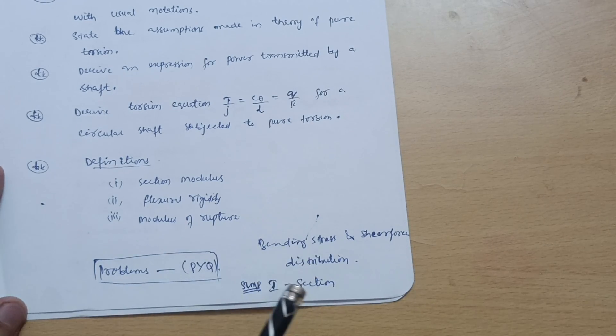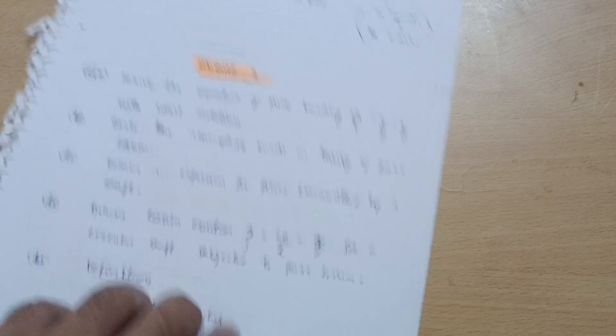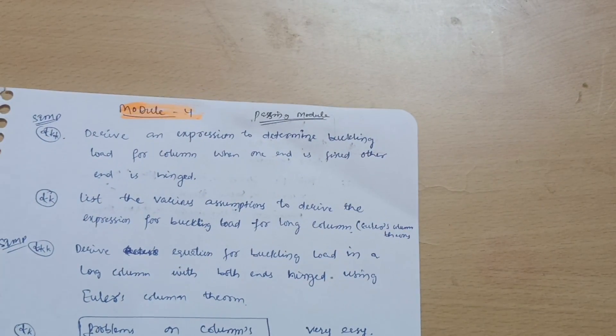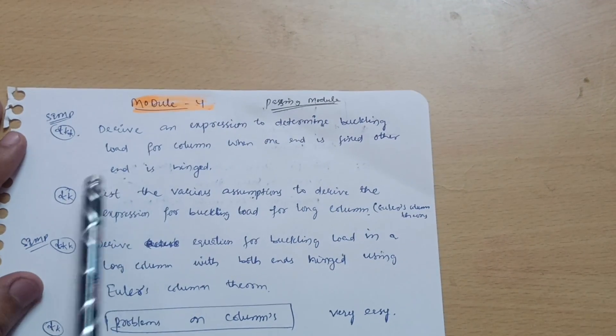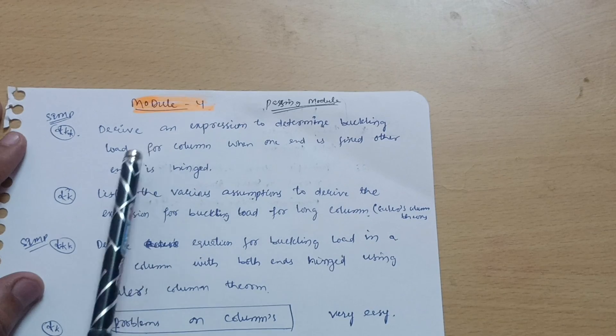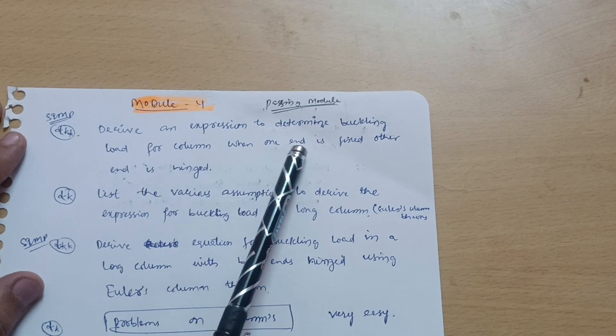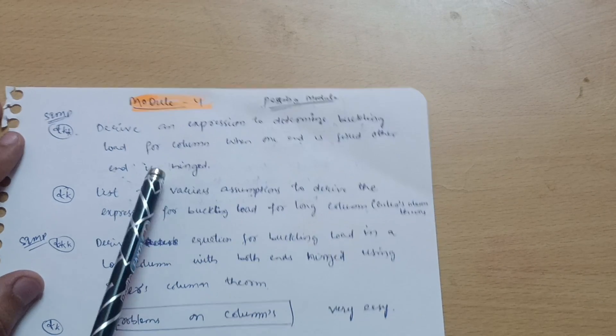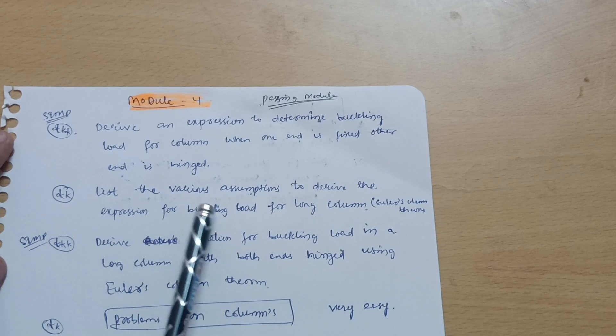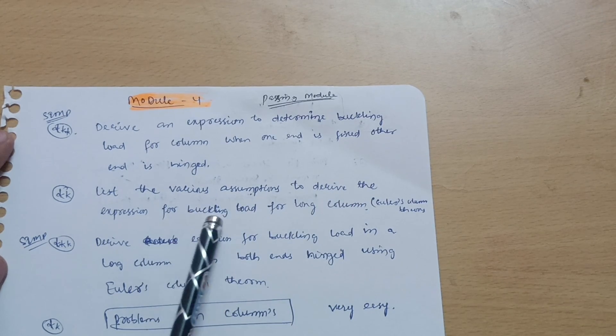That will be definitely beneficial for you people to score well in the Module 3 also. Next is the Module 4, which is the passing module: derive an expression to determine buckling load for column when one end is fixed, other end is hinged. It is the super important question. List the various assumptions to derive the expression for buckling load for long column.